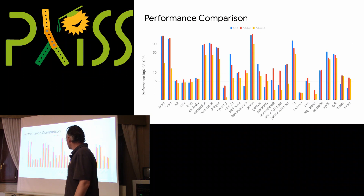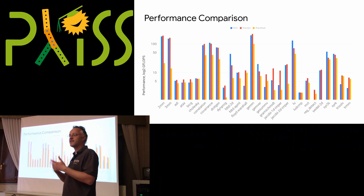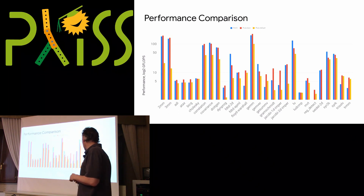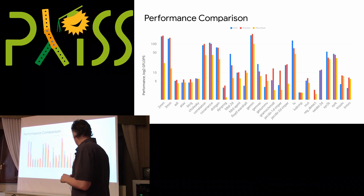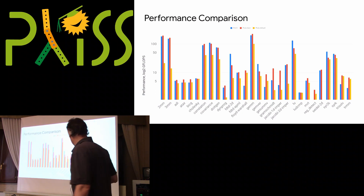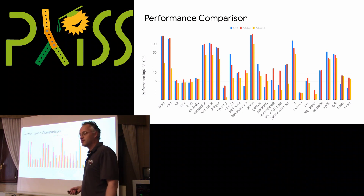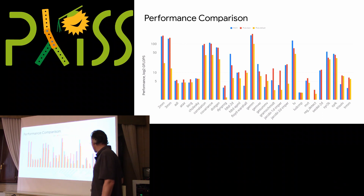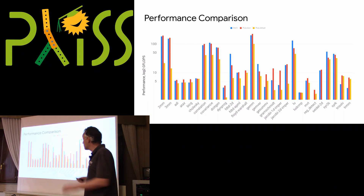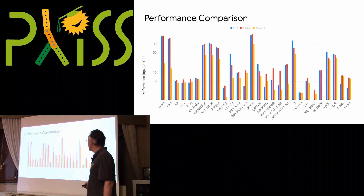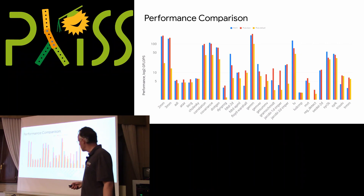Essentially these are linear algebra benchmarks, simulations like finite difference methods in physics, statistical measurements, solvers like LU factorization and Gram-Schmidt, and some stencils which are similar to convolutional layers in neural networks or image processing. So you have a little zoo of numerical kernels that are amenable to polyhedral compilation.